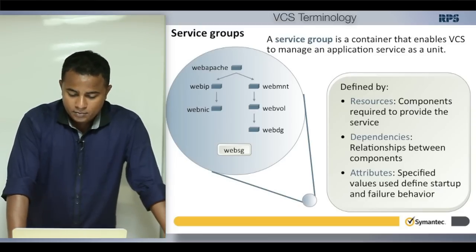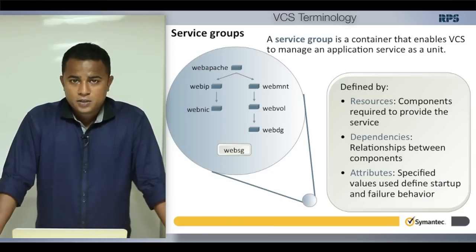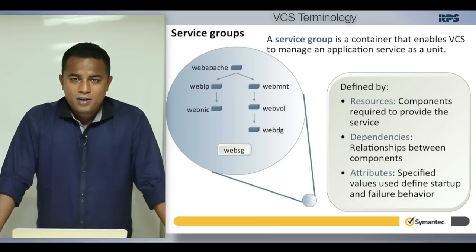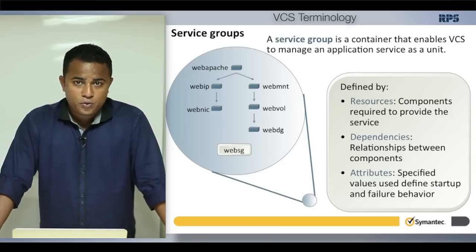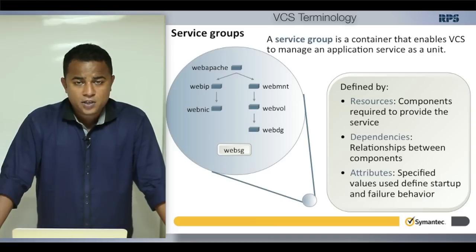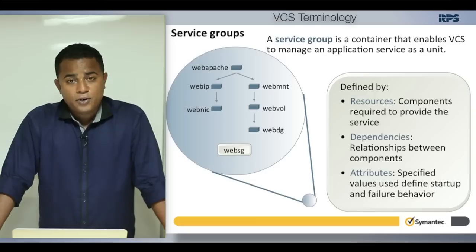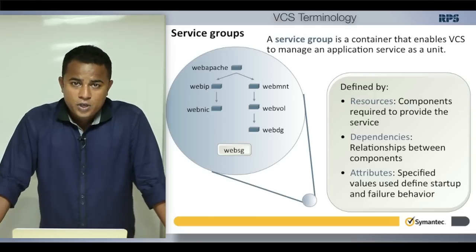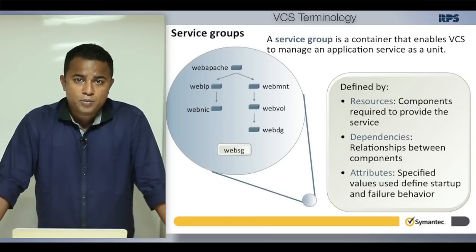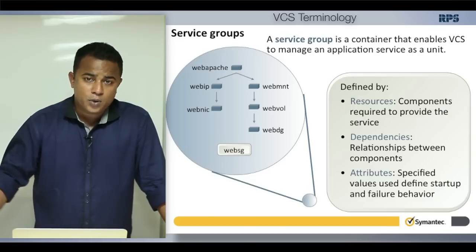Dependencies define the startup sequence: whatever dependencies a resource has must be up before that resource comes online, so VCS knows the starting and stopping sequence. Attributes define behaviors such as on which system the service group should come up when the cluster is powered on, and to which machine the service group should fail over if a node goes down.